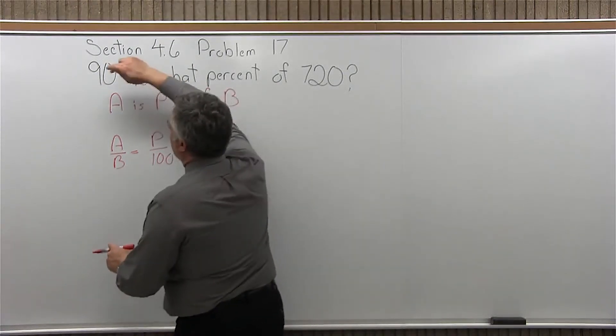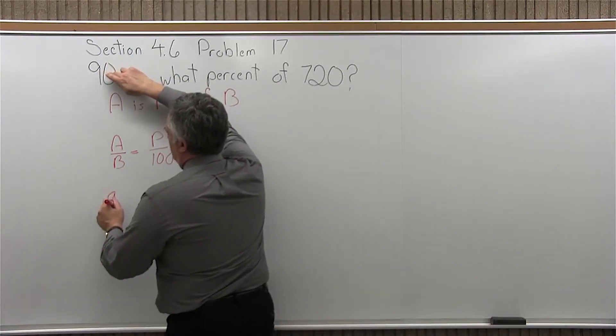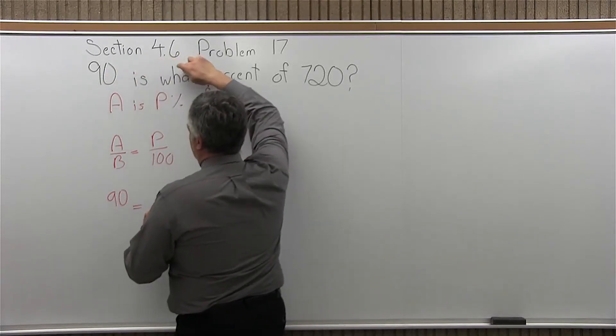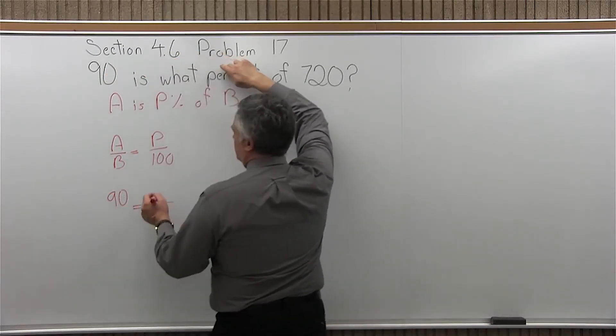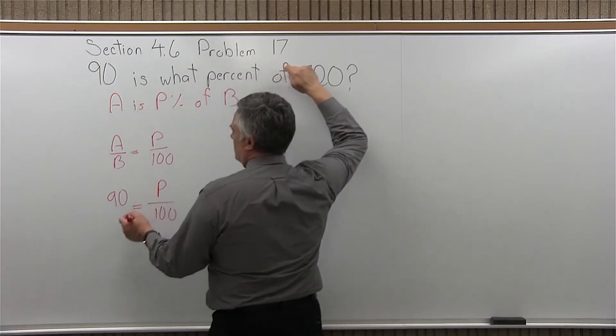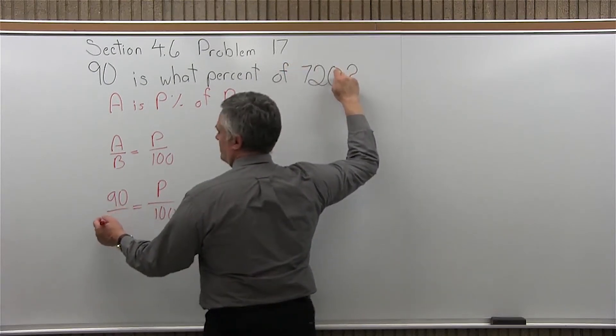So, A is 90, here equals, what percent, so that's the unknown, P over 100. Percent is 100. The what is really the P, the unknown, of 720.